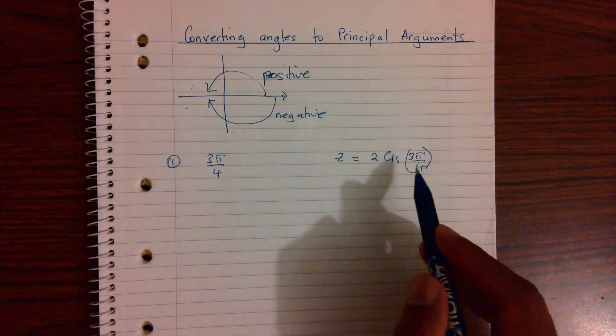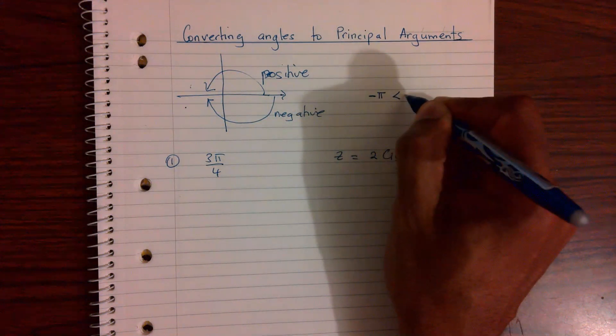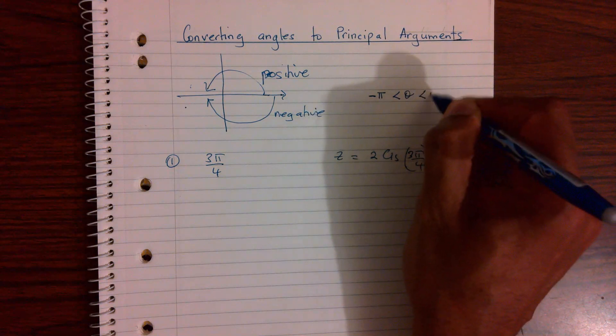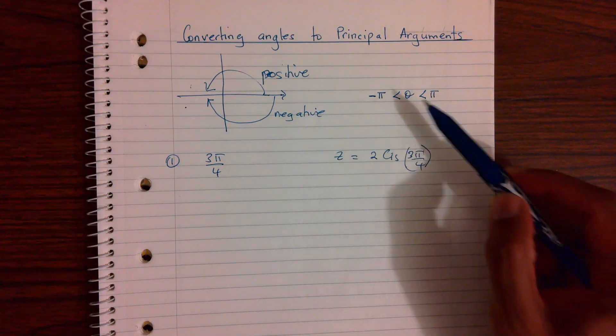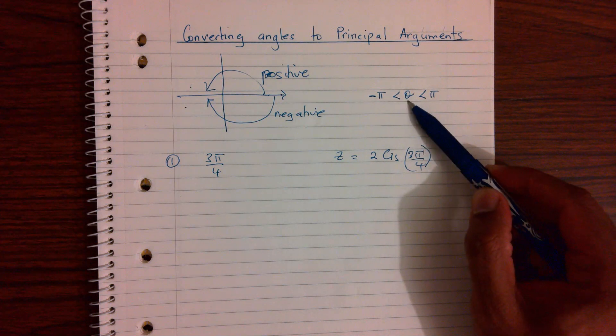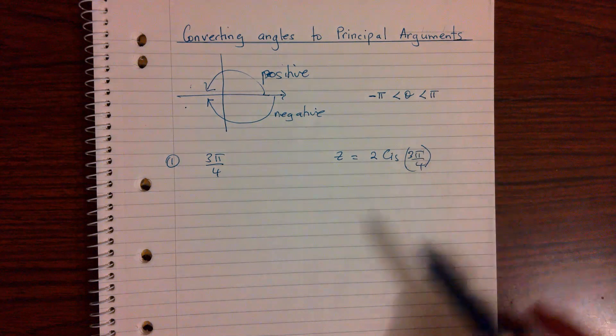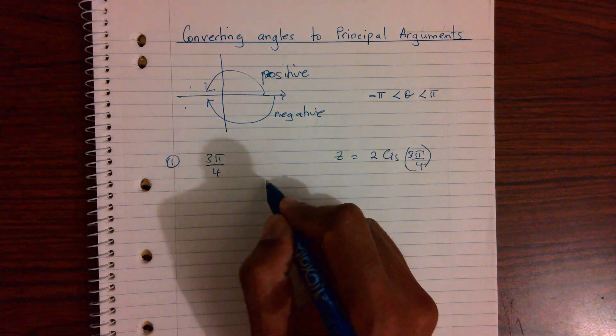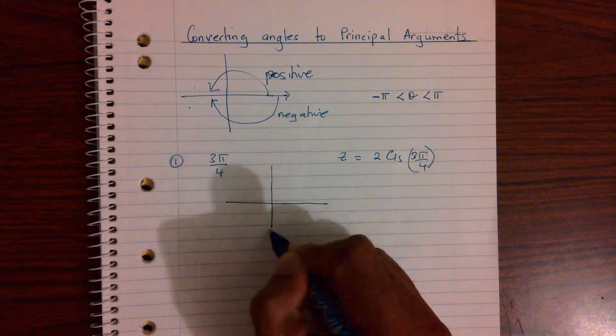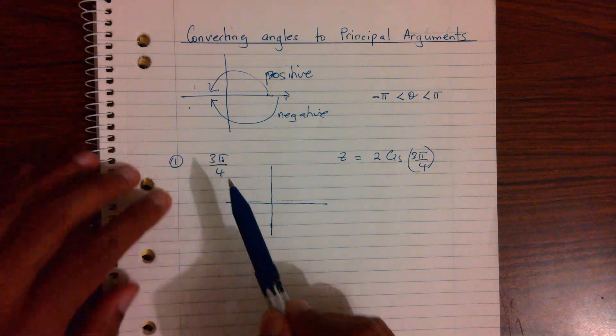Now, principal arguments, by convention, need to be written between negative π and positive π. I'm very sure you've seen this before. It basically says that your angle or the principal argument has to be between negative π and positive π when we write it. Now, this 3π over 4, a good way to visualize this is you draw a quadrant and you think about this π.